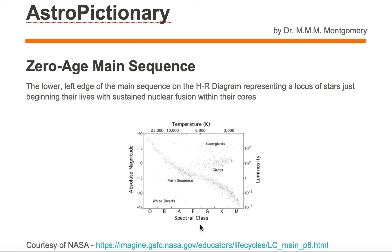Below is a diagram courtesy of NASA, and you will see individual dots on the diagram, each representing a star. What we're plotting for each star is comparing their surface temperatures to how bright the stars appear.